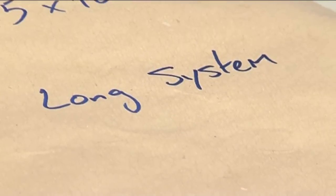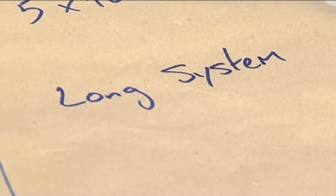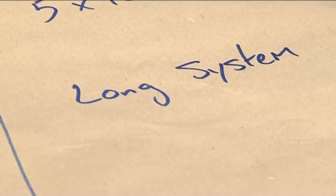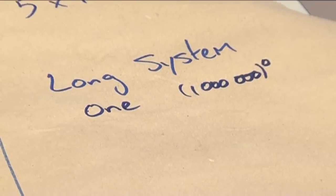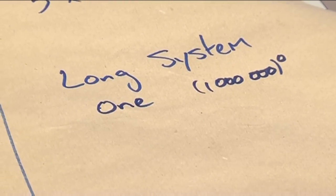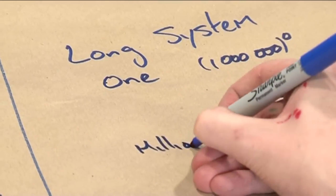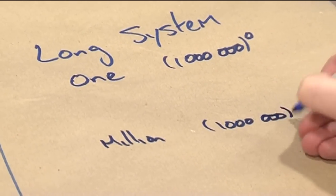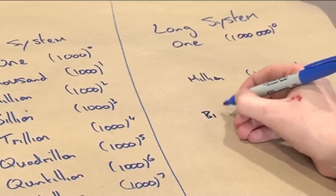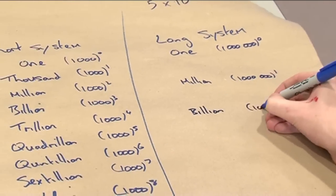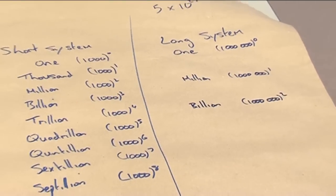The long system is used by most of continental Europe and the non-English-speaking world, and it's based on powers of 1 million. Starting with 1 — that's a million to the power 0 — then a million to the power 1. The next power of a million, in the long system, is called a billion: 1 million squared. It is a bi-million, and that's where the word billion comes from. So it's a million to the power 2.